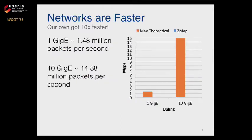But networks can be faster than gigabit ethernet. Our lab got a little bit faster in the fall when we were lucky enough to get a 10 gigabit uplink. 10 gig allows for 10 times as many packets — about 14.88 million per second rather than 1.48. The natural question was: now that we have this faster uplink, let's plug ZMAP in and let it run real fast.